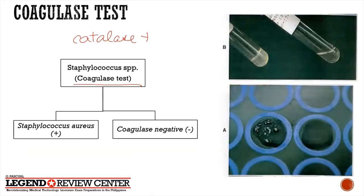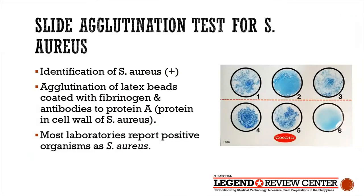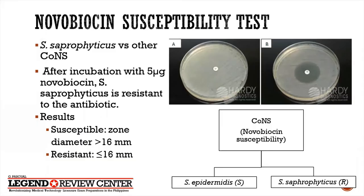If the coagulase test is positive, that's Staph aureus; if negative, you have coagulase-negative Staphylococcus. The slide agglutination test is used for identification of Staph aureus. For coagulase-negative staph, the next step is to differentiate Staph epidermidis from Staph saprophyticus, which we do using the novobiocin susceptibility test.